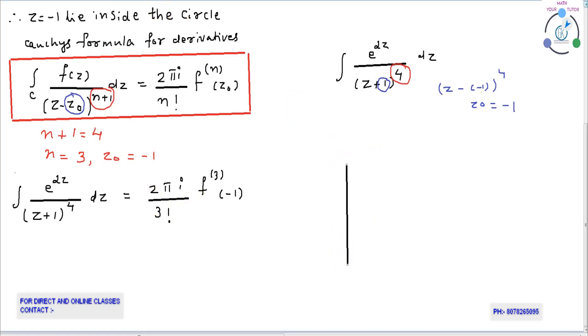Then, differentiate e raised to 2z three times. First derivative is e raised to 2z into 2. Second derivative is e raised to 2z into 4.